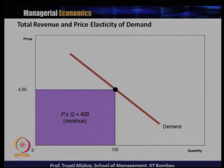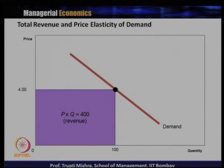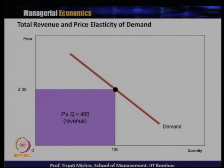Now we will see how total revenue changes in cases of elastic and inelastic demand. Here we have a linear demand curve, and revenue is the area under the curve — that is, price multiplied by quantity. If price is 4 rupees, you draw lines to both axes: the Y-axis gives the corresponding price, the X-axis gives the corresponding quantity. With quantity of 100 units and price of 4 rupees, revenue equals 400 rupees.